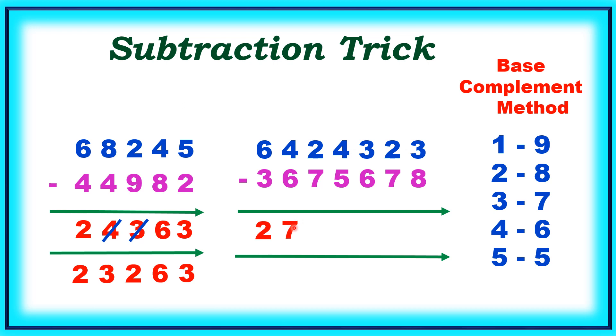Because here next number is bigger than this one. 7 complement is 3. 3 plus 2 equals 5. But I am writing 4 because this one is not possible to subtract. 5 complement is 5. 5 plus 4 equals 9.